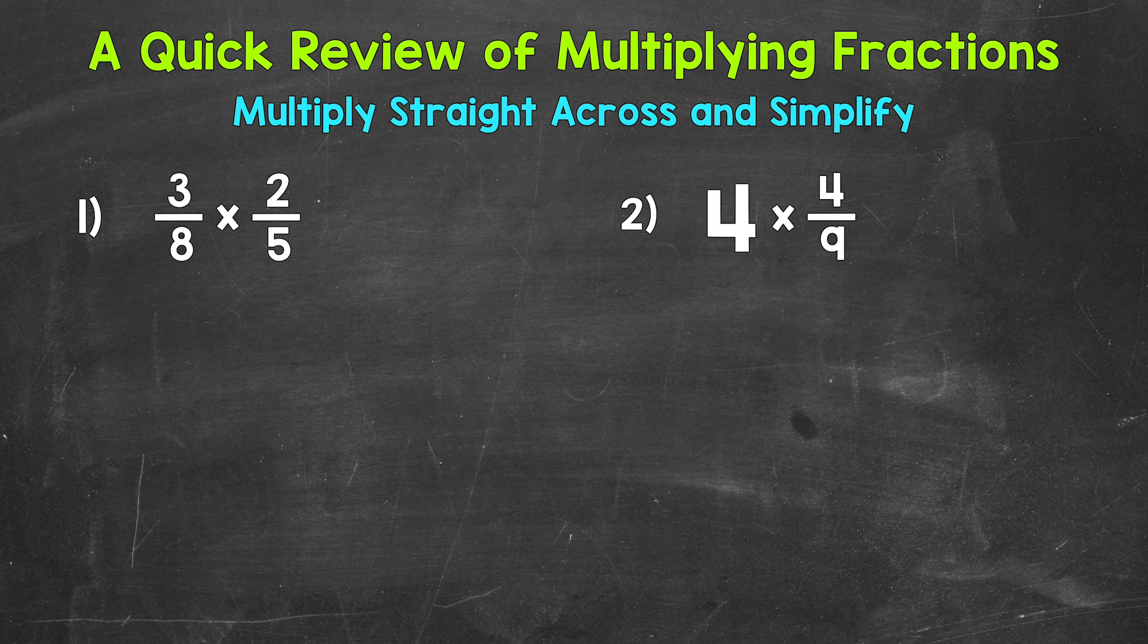We have 3 eighths times 2 fifths. Now, when we multiply fractions, all we need to do is multiply straight across. So, numerator times numerator, the top numbers, and then denominator times denominator, the bottom numbers. Once we do that, we can look to simplify if need be.